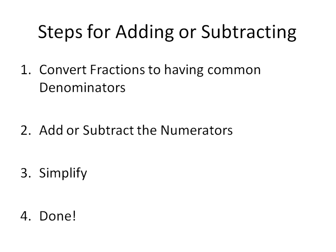Here are the steps for adding or subtracting fractions. First, you convert the fractions so that they have common denominators. Then you add or subtract the numerators only — just the numbers on top. Simplify, and then you're done. For this lesson we'll go through examples mainly of fractions that already have the same denominator. In part two, we'll do all the steps: converting, then adding, subtracting, and simplifying.